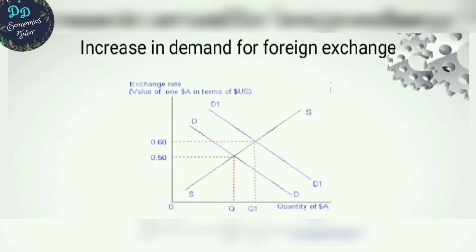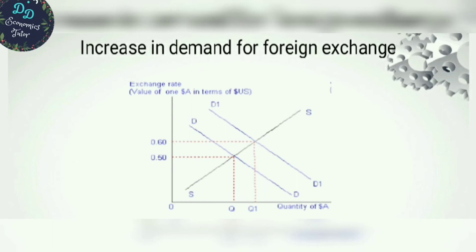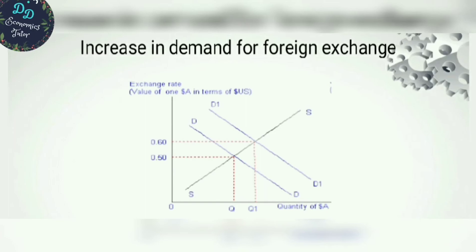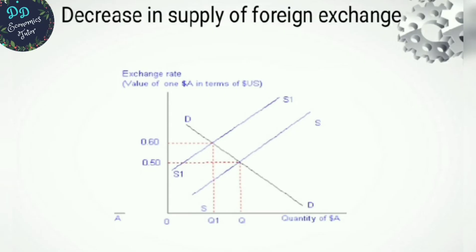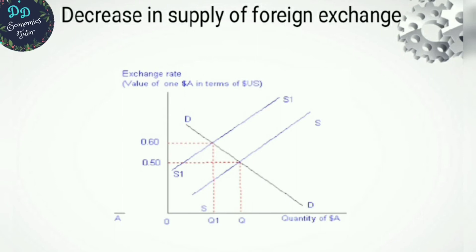Due to a decrease in supply of foreign exchange, the supply curve shifts to the left. A new equilibrium point is achieved at a higher exchange rate. This leftward shift in the supply curve also results in depreciation of the domestic currency — supply decreases, foreign exchange rate increases.